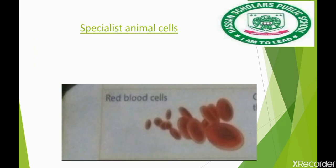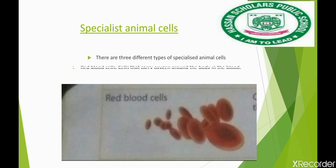In specialized animal cells, there are three different types. The first one is the red blood cells, which are the specialized animal cells.